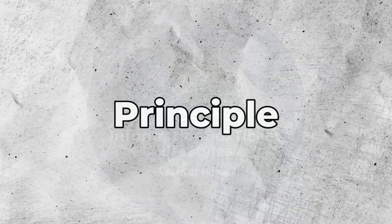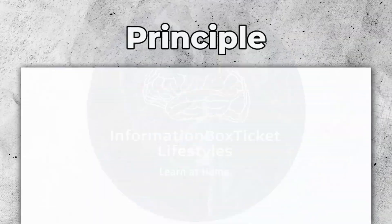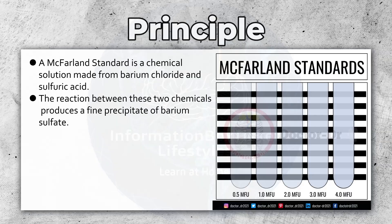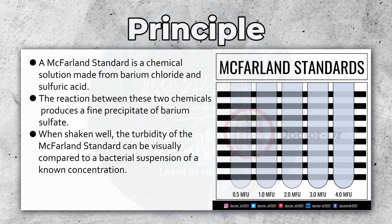Principle of McFarland Standards. A McFarland Standard is a chemical solution made from barium chloride and sulfuric acid. The reaction between these two chemicals produces a fine precipitate of barium sulfate. When shaken well, the turbidity of the McFarland Standard can be visually compared to a bacterial suspension of a known concentration.